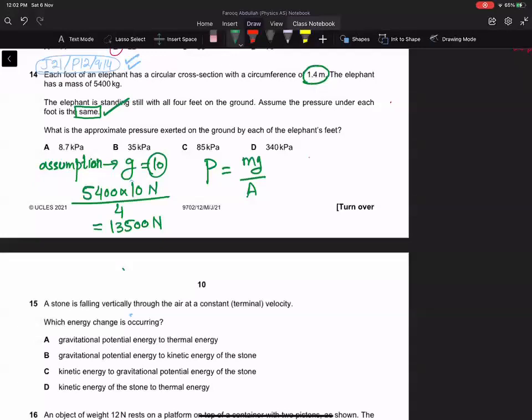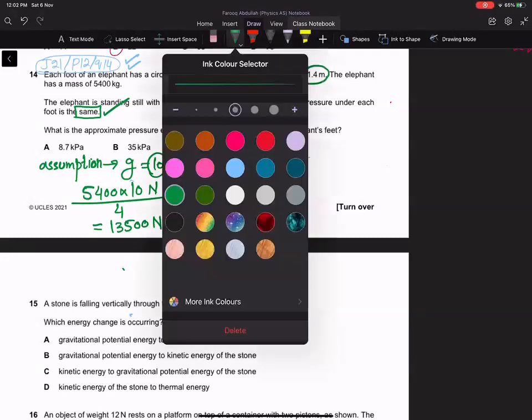Now here is a problem. We cannot use the circumference. We have to calculate the radius or diameter from the circumference, and then from that we'll calculate the area.